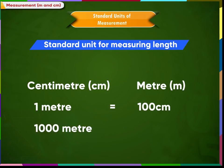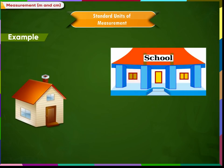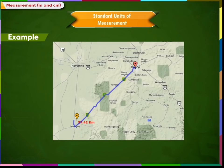1,000 meters put together make a bigger unit called a kilometer. Kilometer is the unit which is used to measure distances, for example, the distance between your school and your home, or the distance between two cities. One kilometer is equal to 1,000 meters.